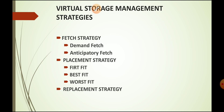Placement strategy determines where an incoming piece of program or data is to be placed in memory. It has three types: first fit, where an incoming job is allocated in the first free block; best fit, where the job is placed in the smallest leftover block that fits most tightly with the smallest unused space; and worst fit, where the job is placed in the largest leftover block — the largest possible hole.